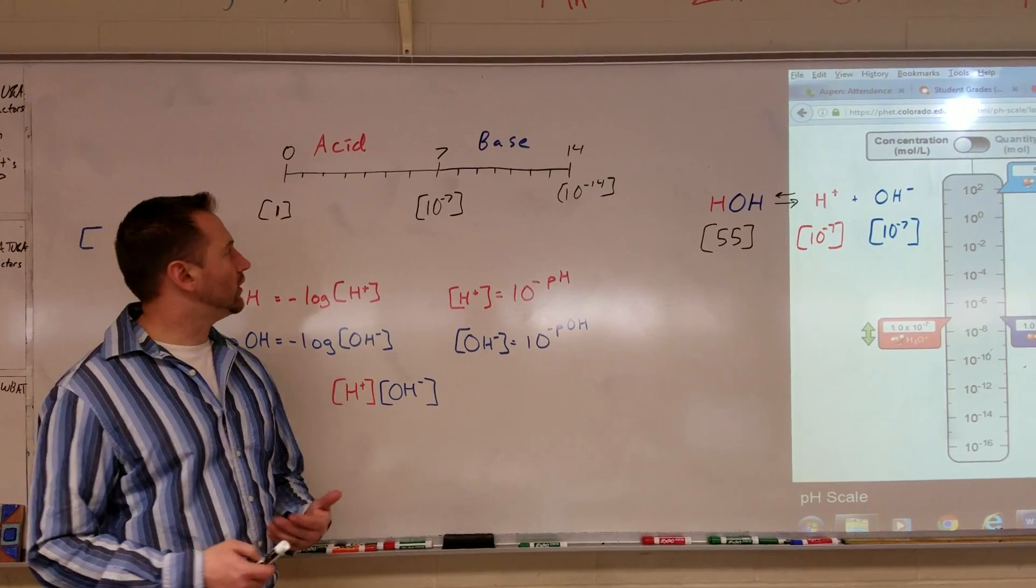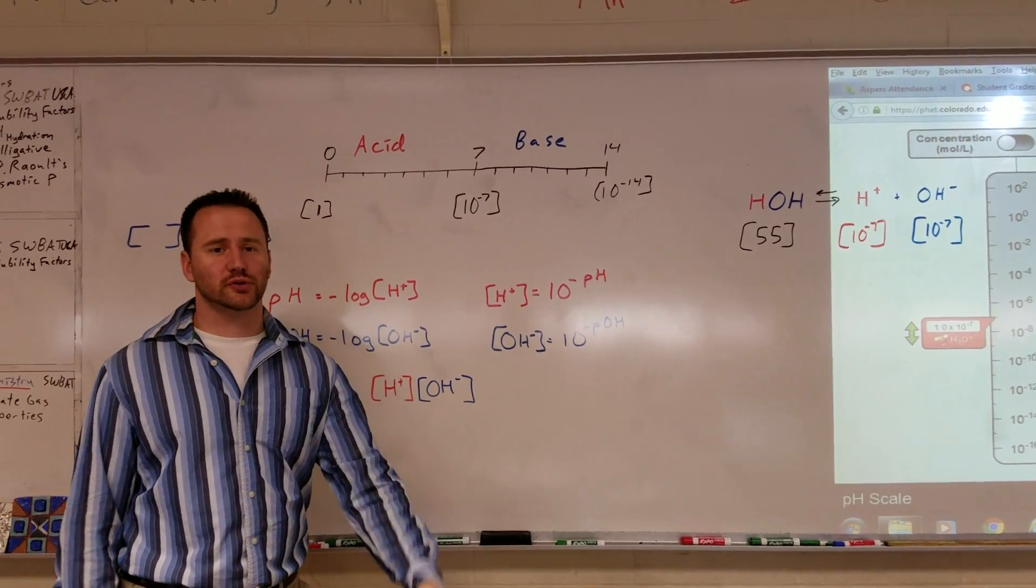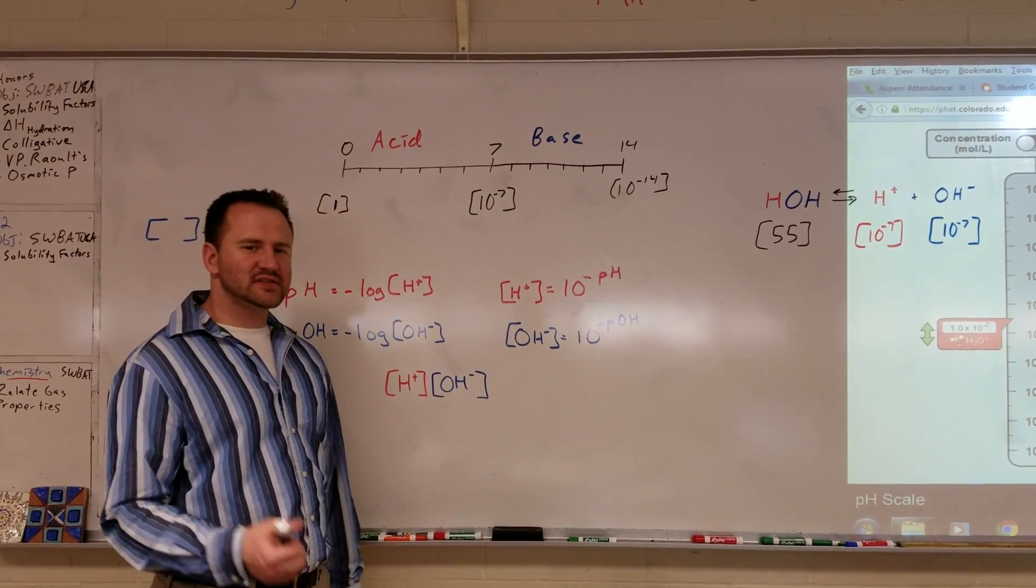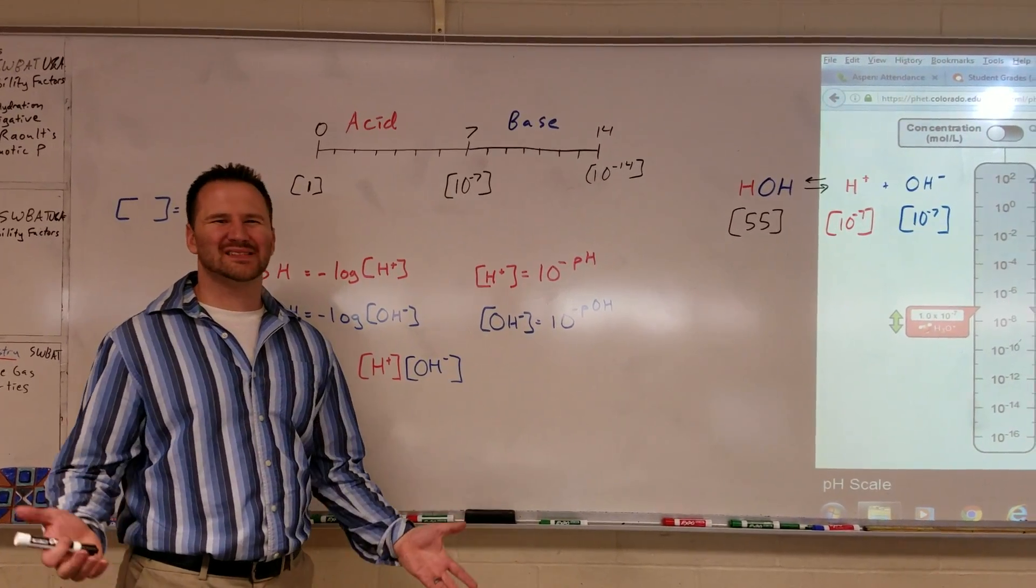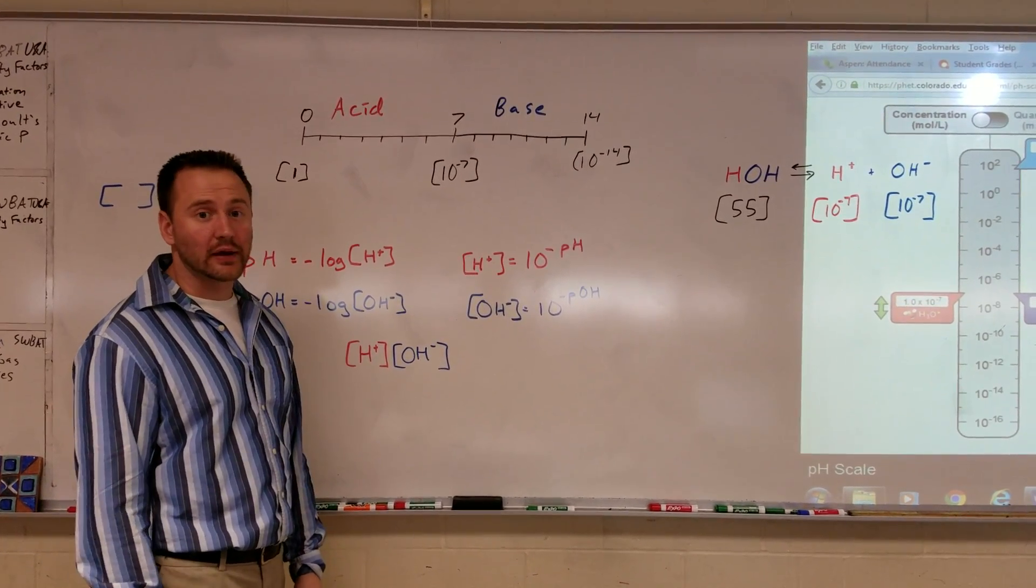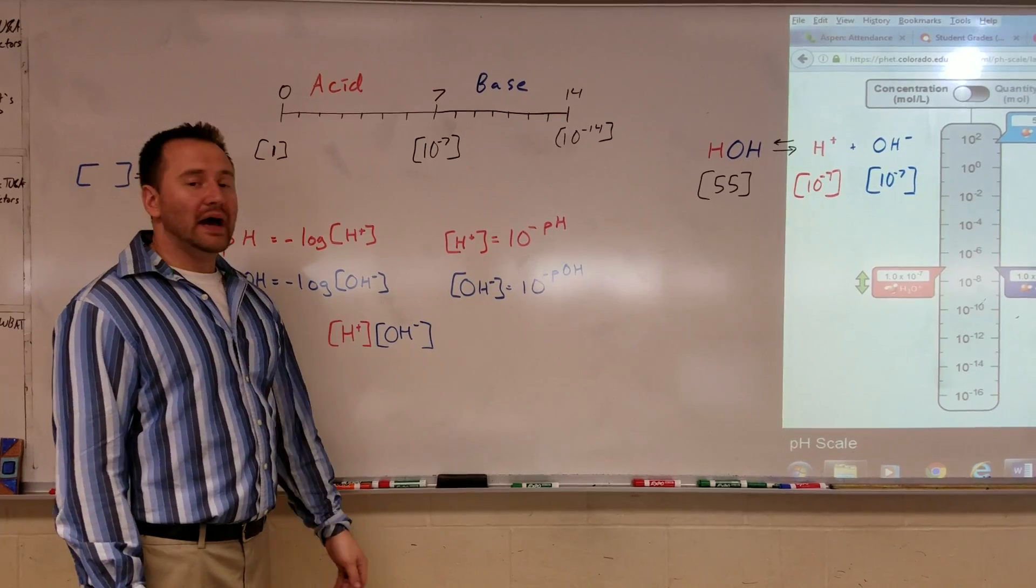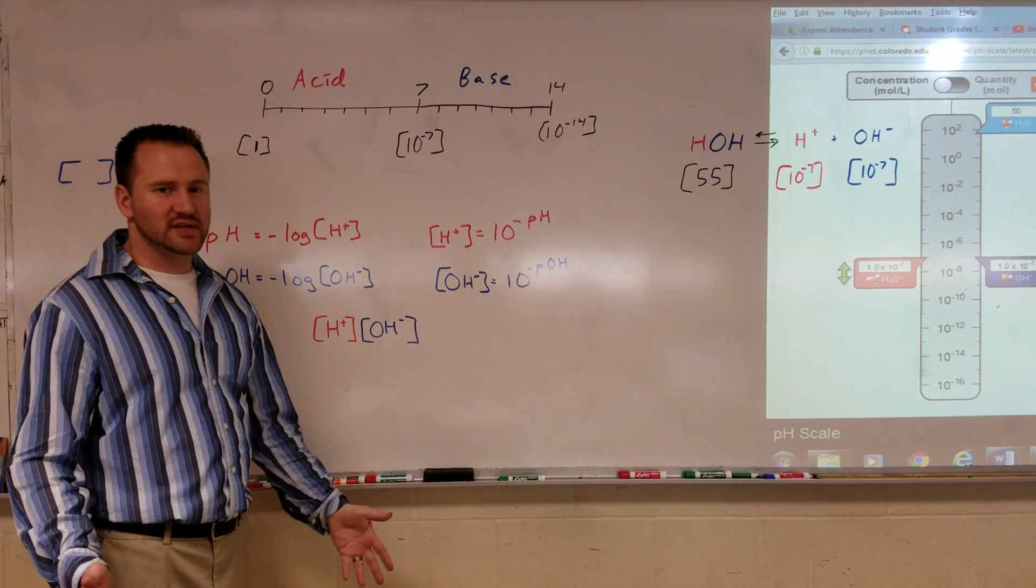We've all heard of the pH scale before. We know it starts at 0, which is a lie, and ends at 14, which is also a lie. We know that 7 is considered neutral, like water. Why 7? It's kind of a random number to be in the middle of a scale. Anyway, acids would be anything with a pH less than 7, bases would be anything with a pH greater than 7.